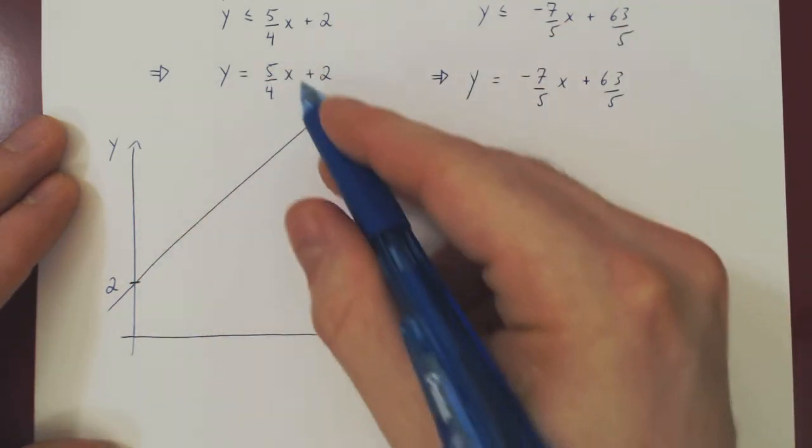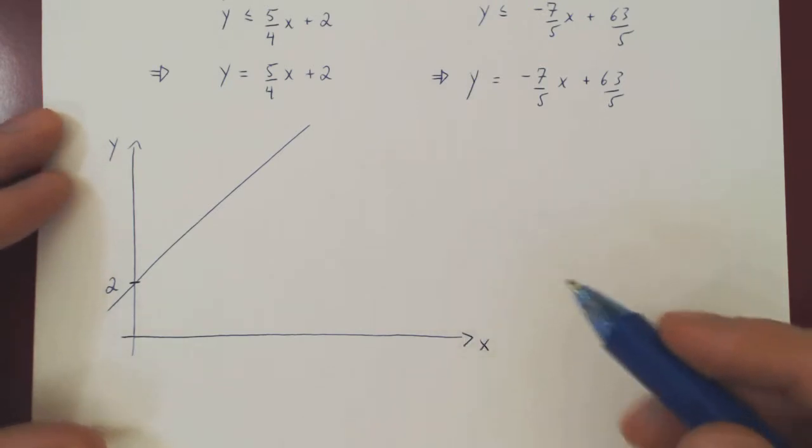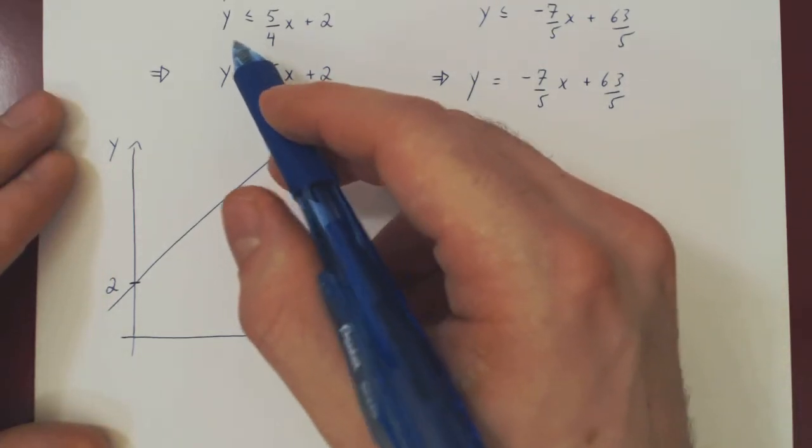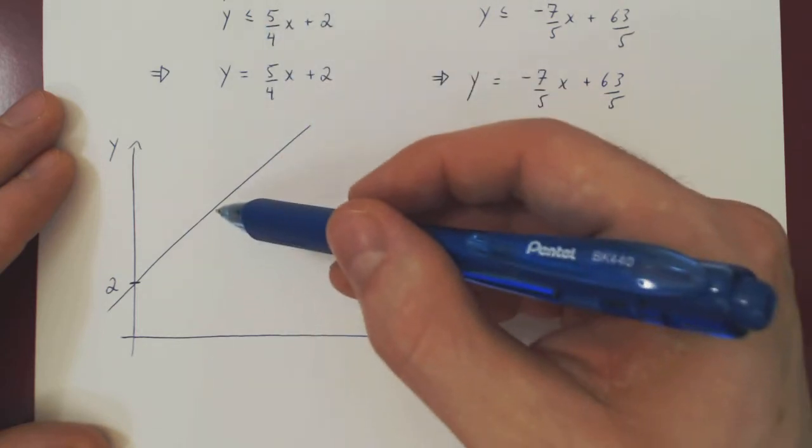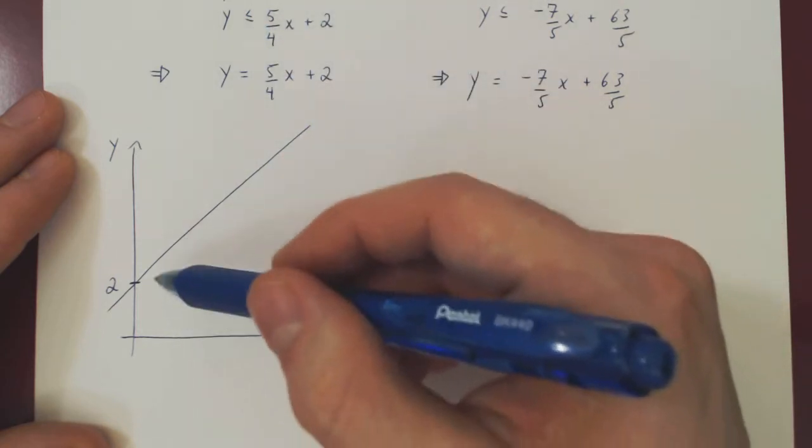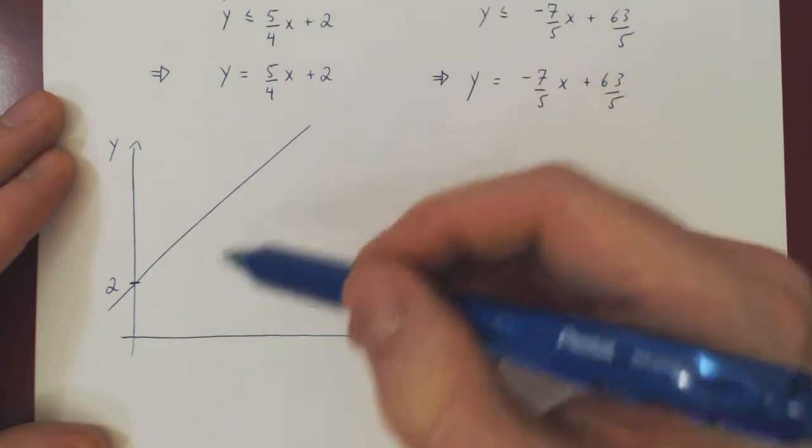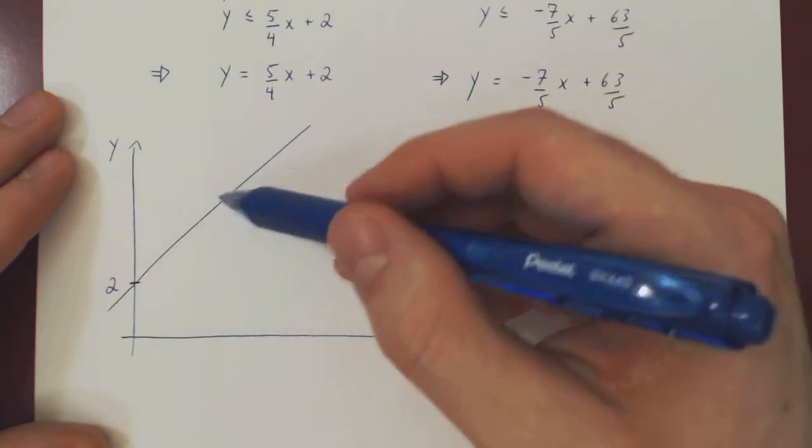This is a line with positive slope slightly bigger than 1, and the y-intercept, if x is 0, then y is 2. So we have a y-intercept of 2, and you can draw, roughly, a line with slope slightly bigger than 1, maybe something like this. So that's our first line.